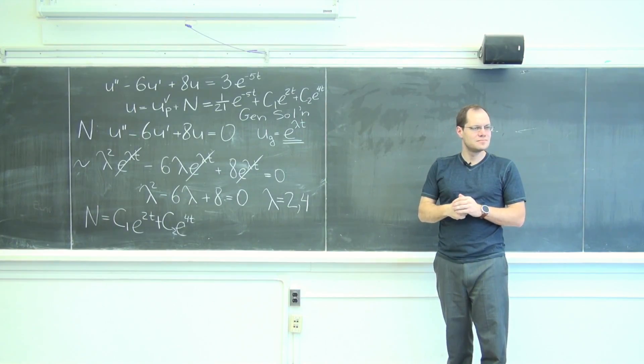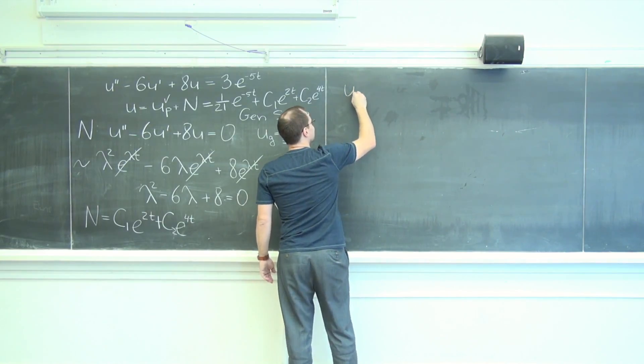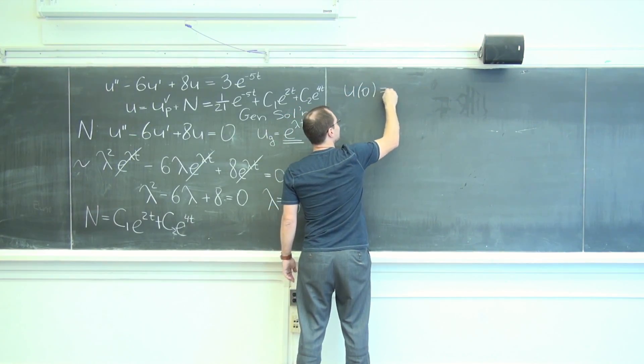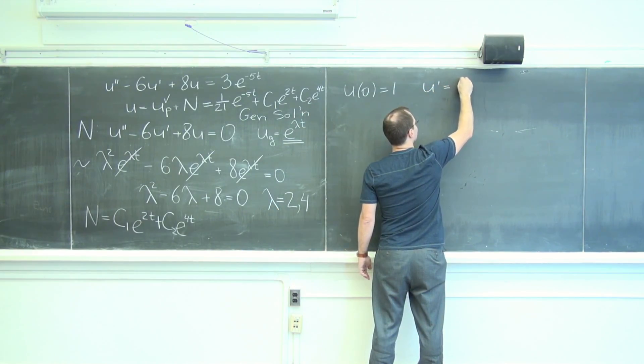u of zero equals? Good, right answer. u of zero equals one, u prime of zero, 42.